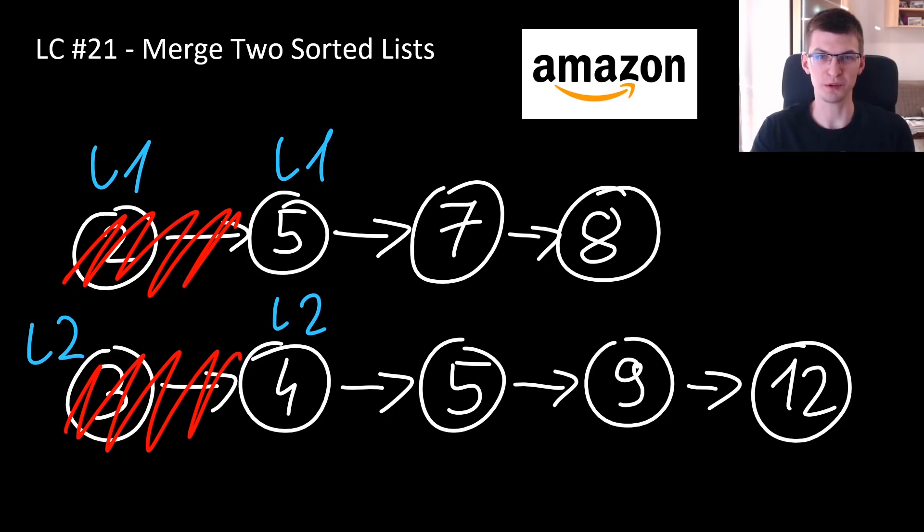Thanks to the fact that both lists are sorted, every time the next node I want to add to the combined list, it will be first node in first list or first node in the second list. I need to just compare those two values.